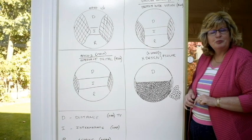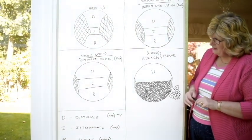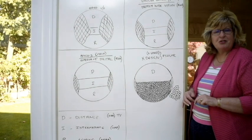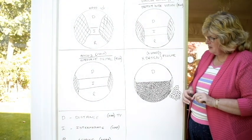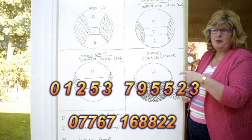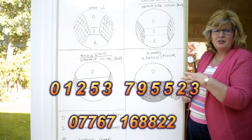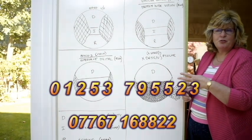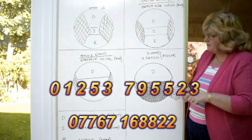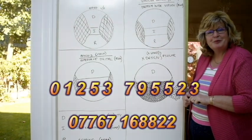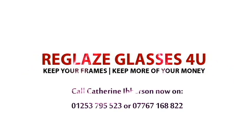So I hope that's helped clear things up a little bit. And as I say, my name's Catherine Iverson and I run reglazeglasses4u.co.uk. You can find me on there. If you've got any queries, if you want to ask me any queries on any of these, you can give me a call on 01253 795523 or 07767 168822 and I shall speak to you then and I'll be happy to help. Thank you.